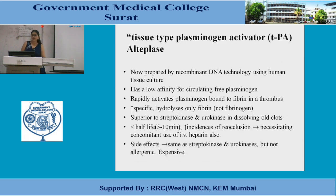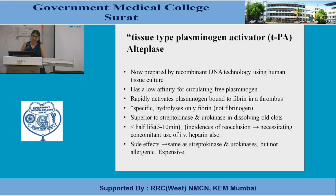The next group is tissue-type plasminogen activator, and the drug is alteplase. Prepared by recombinant DNA technology using human tissue culture, it has low affinity for circulating free plasminogen but rapidly activates plasminogen bound to fibrin in the thrombus. It has greater specificity, hydrolyzing only fibrin and not fibrinogen, and is superior to streptokinase or urokinase in dissolving old clots. The half-life is only 5–10 minutes, leading to increased incidence of reocclusion and necessitating concomitant IV heparin. Side effects are similar to streptokinase and urokinase, but it is not allergenic; however, it is expensive.